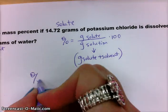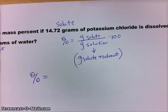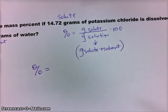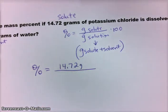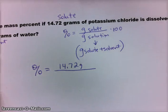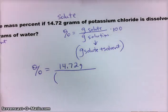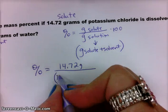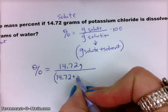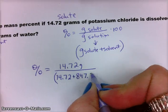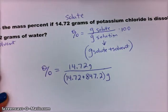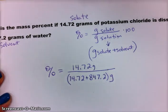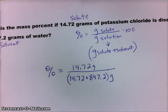That is 14.72 grams over grams of the solution. The solution is the solute plus the solvent, so we have 14.72 plus 847.2 grams. So those need to be added together. Again, our solution is solute plus solvent because those are both together in the container making up the solution. And then of course we need to multiply by 100.